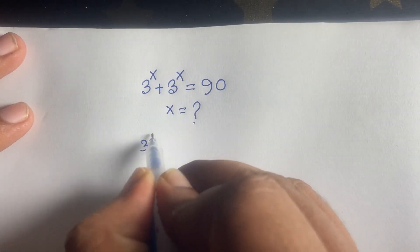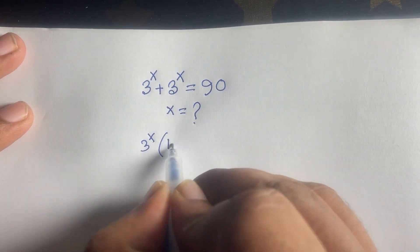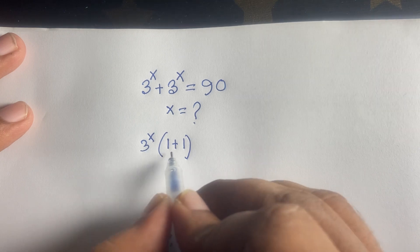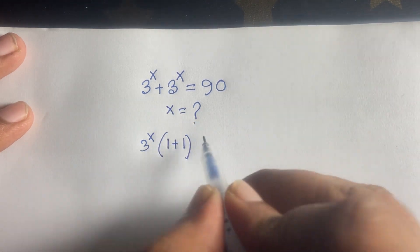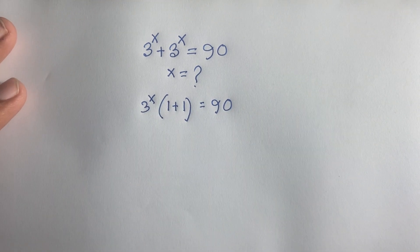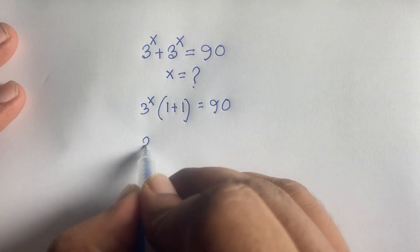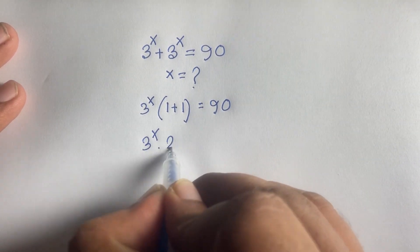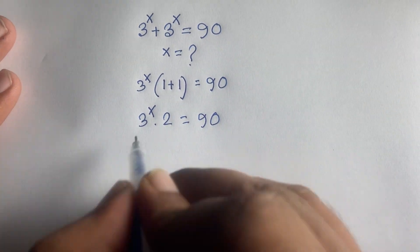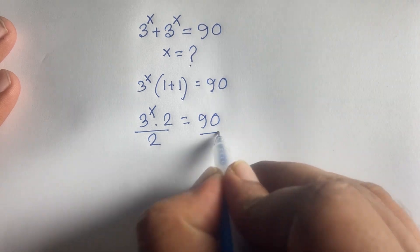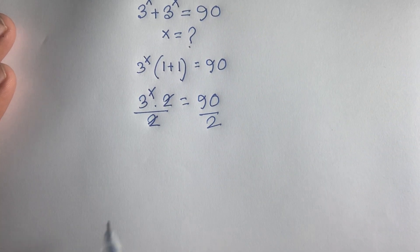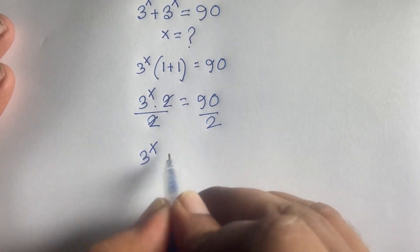Taking 3 to the power x as common, it will be 3 to the power x times 1 plus 1, which gives 1 plus 1 equals 2. So 3 to the power x times 2 is equal to 90. Then if I divide both sides by 2, the 2 cancels and we find 3 to the power x is equal to 45.